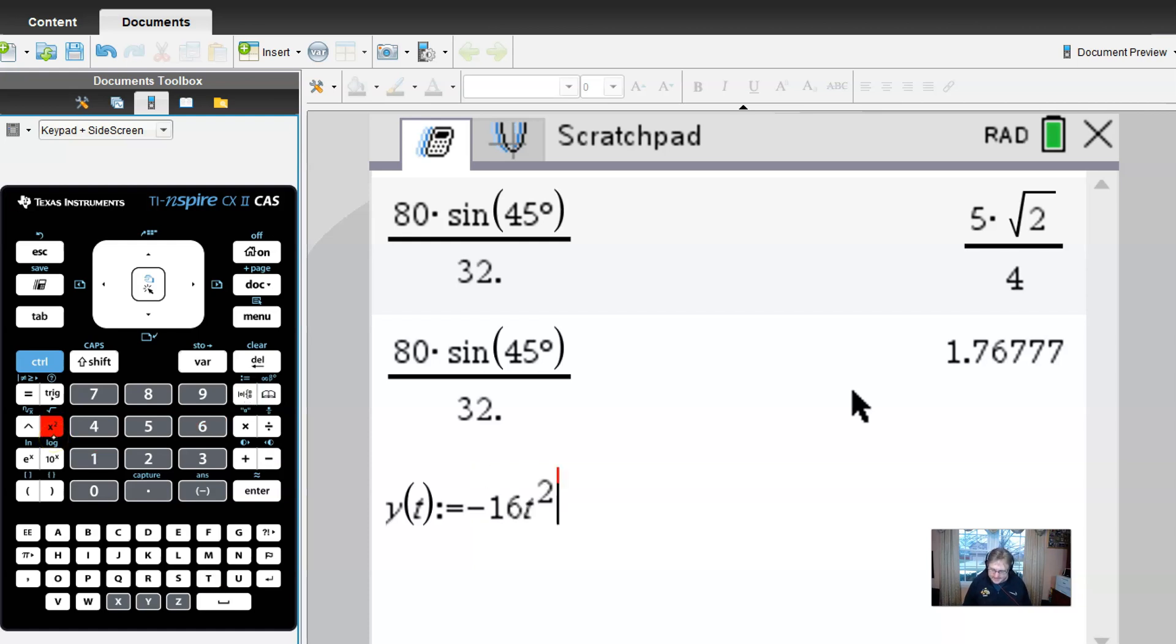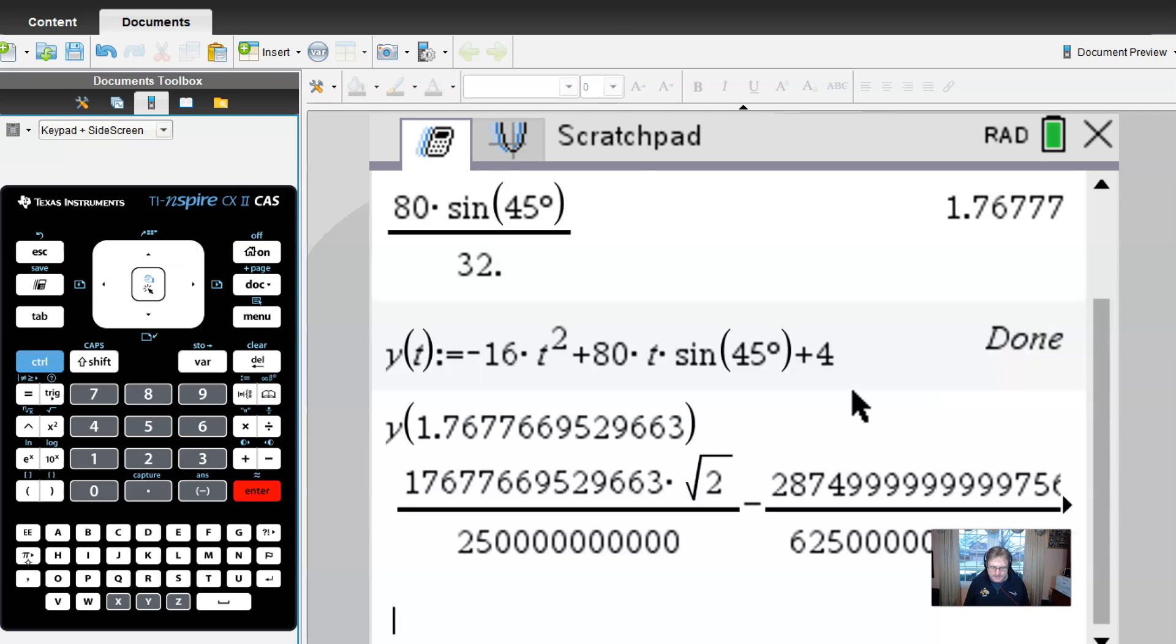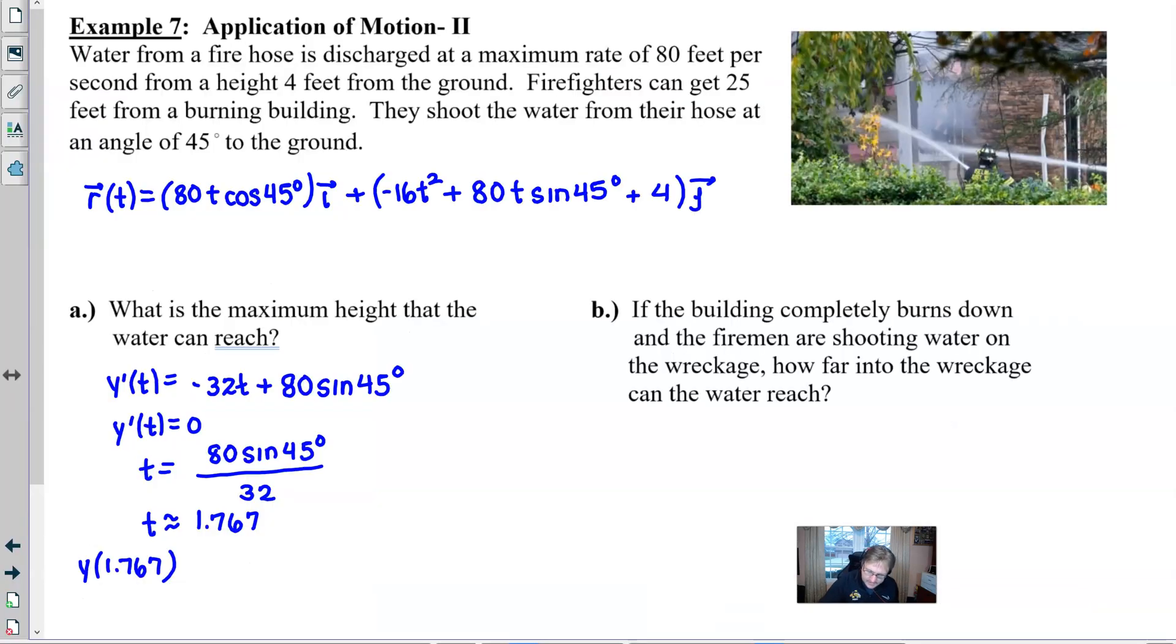So negative 16t squared plus 80 times t times the sine of 45 degrees plus 4. And now if I just take the y, evaluate it at my 1.767, do my little control enter so I can get a decimal answer, I will get a result of 54 feet. And that's how high the water is going to shoot. Actually came out to be a nice integer answer.